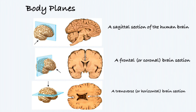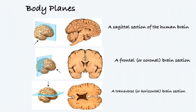Here is an example of taking different planes of the brain. Under the sagittal plane, we can see a lot of the sections of the brain, including the brain stem located here, the cerebellum, and all other structures in the middle portion of the brain.